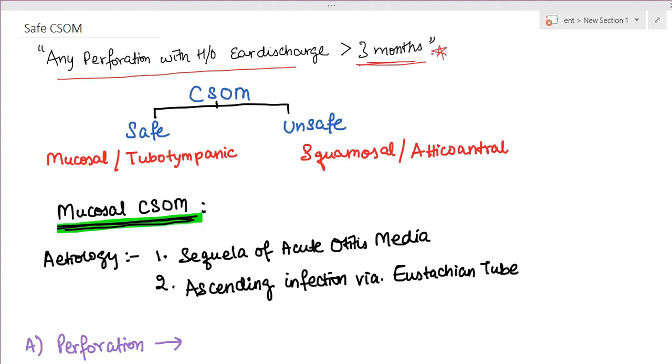CSOM can be divided into two main categories: safe CSOM and unsafe CSOM. Safe CSOM is also known as mucosal or tubotympanic type, and unsafe is squamosal or atticoantral. Tubotympanic and atticoantral refer to the position of the CSOM, and squamosal refers to the presence of cholesteatoma. There are more complications seen in unsafe CSOM, which is why it's called unsafe.